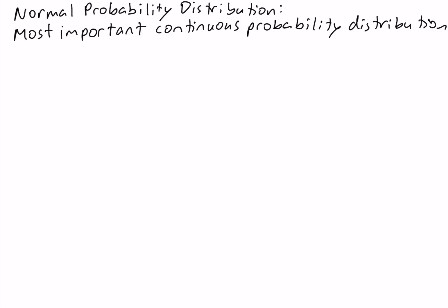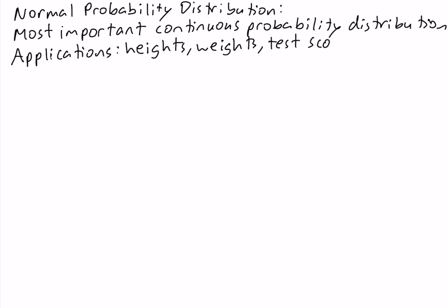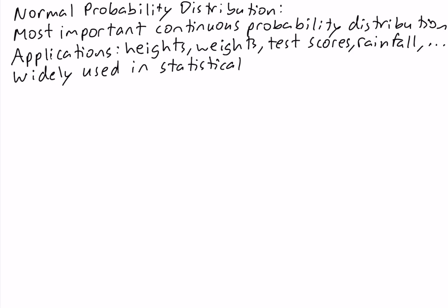There are two reasons why the normal distribution is so important. The first reason is that it has a lot of real-world applications. For example, people's heights, people's weights, test scores, rainfall, and so on, all have a normal distribution. The second reason is that it is widely used in the field of statistical inference, which includes important topics like confidence intervals and hypothesis testing.